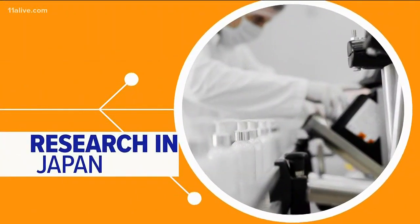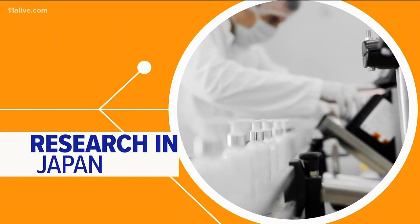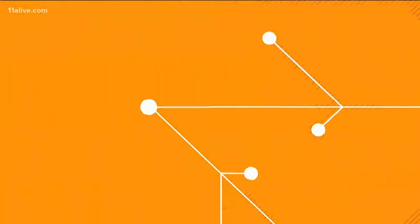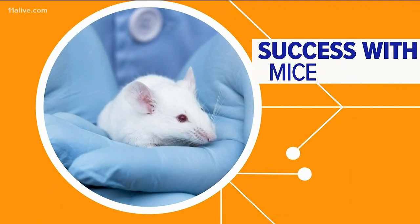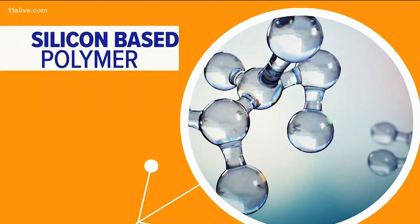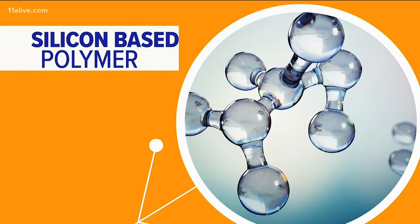Scientists at Yokohama National University in Japan have been researching ways to regenerate hair follicles. They've developed a method of stimulating new hair growth that has worked on mice. It involves a silicon-based polymer called dimethylpolysiloxane.